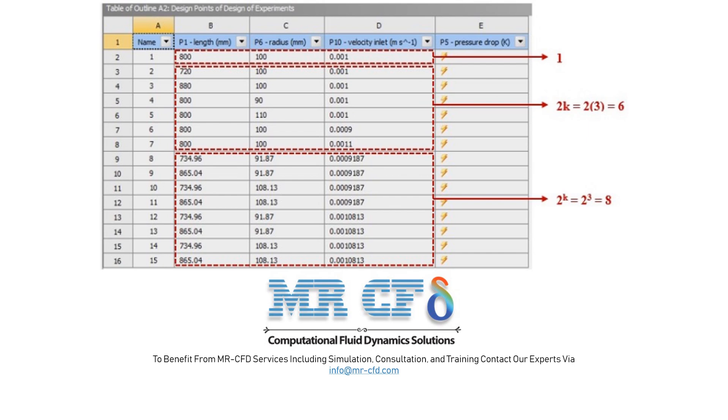The mean value for the length parameter is 800 millimeter, for the radius parameter is 100 millimeter, and the velocity is equal to 0.001 meter per second.